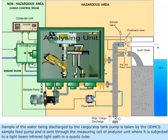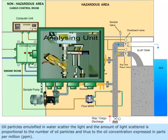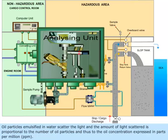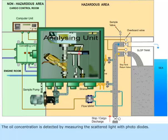In the measuring cell, the sample is subjected to an infrared light beam in a quartz tube. Oil particles emulsified in water scatter the light, and the amount of light scattered is proportional to the number of oil particles and thus to the oil concentration expressed in parts per million or ppm. The oil concentration is detected by measuring the scattered light with photodiodes.